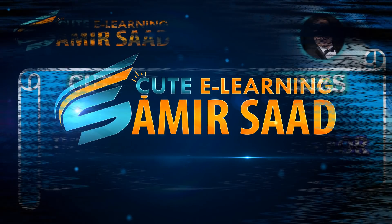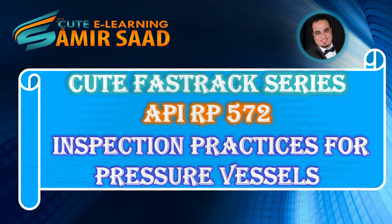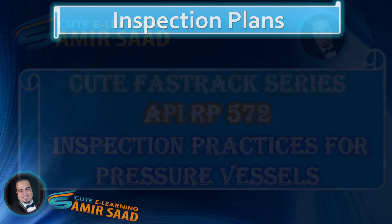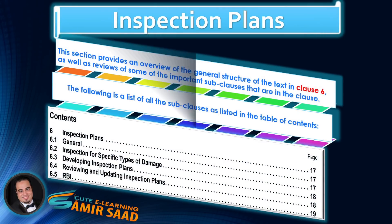Welcome to the Qt Fast Track Series for API Recommended Practice 572, Inspection Practices for Pressure Vessels. In this lecture, we will discuss the inspection plans. This section provides an overview of the general structure of the text in Clause 6, as well as reviews of some of the important sub-clauses that are in the clause.